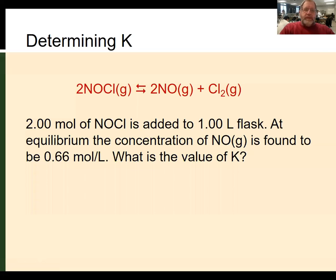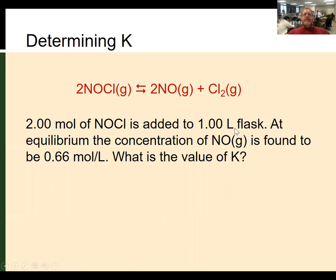One of the things we need to be able to do is determine the value of K. This is easy if we can measure lots of things. Here is an example: we have a reaction where two moles of NOCl is added to a one-liter flask, and at equilibrium the concentration is found to be 0.66 moles per liter. What is the value of K? We're going to use our ICE table to work through this.